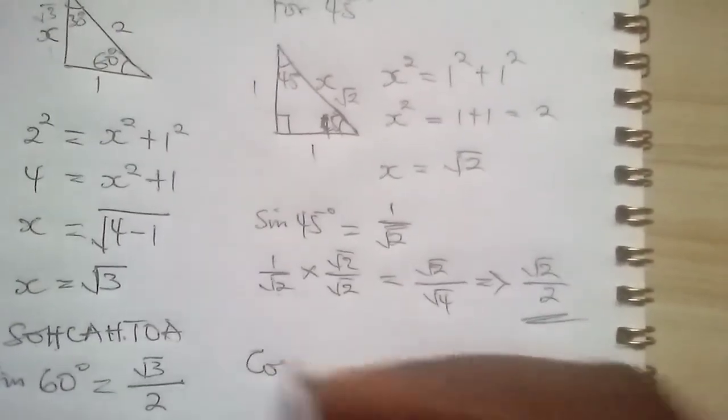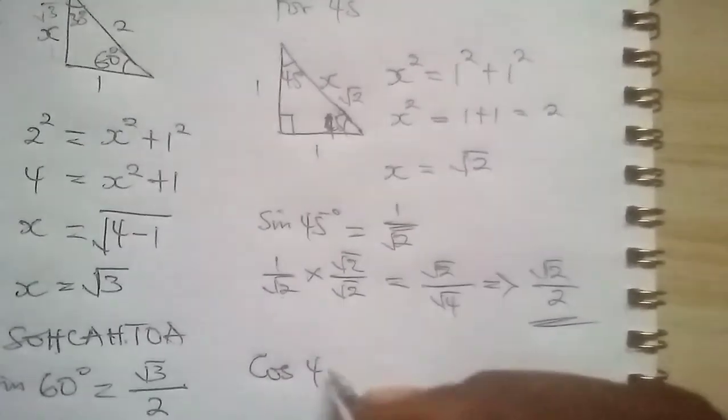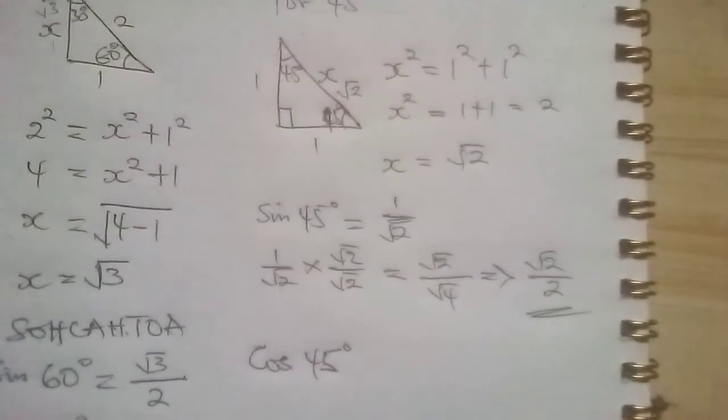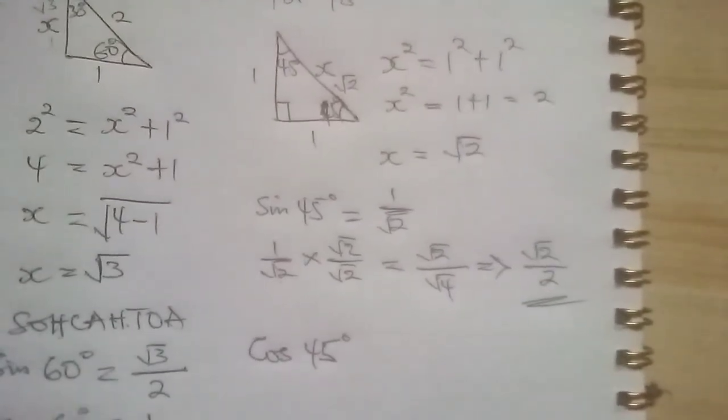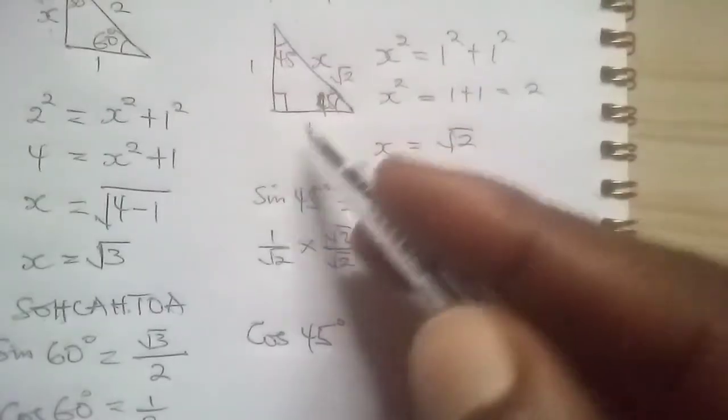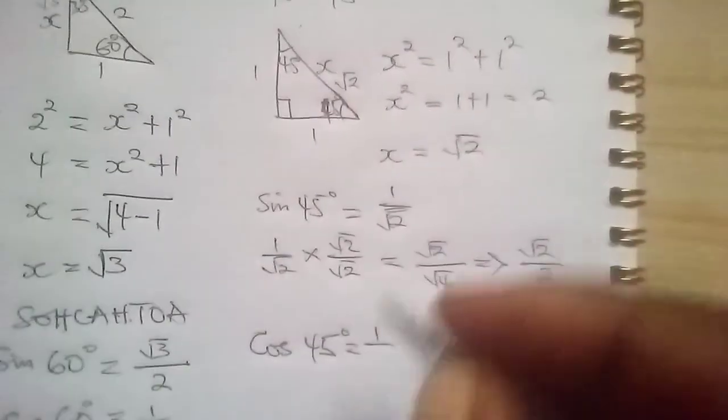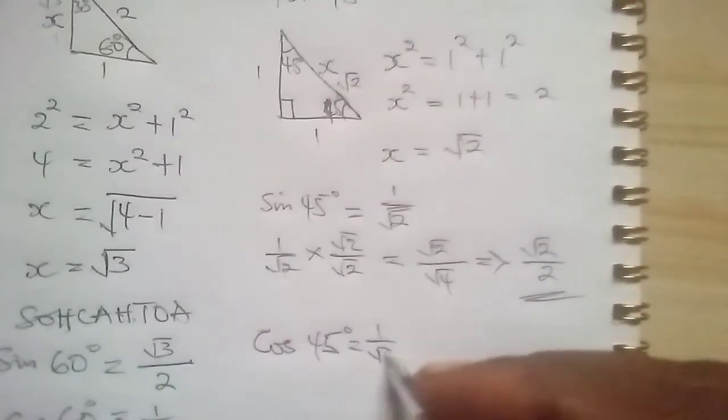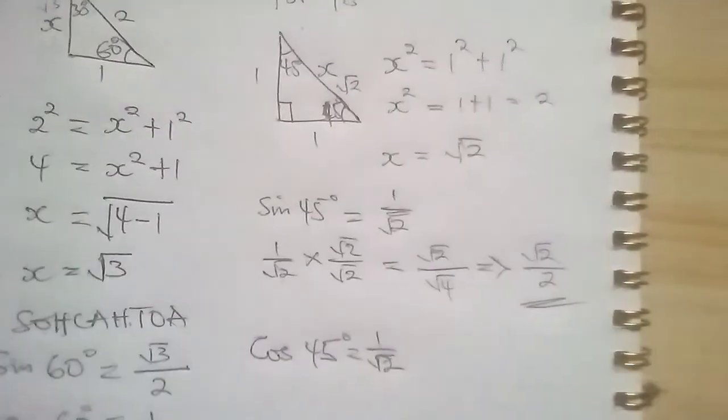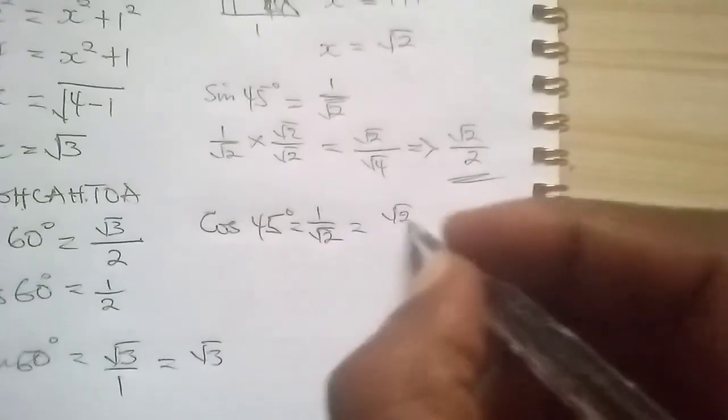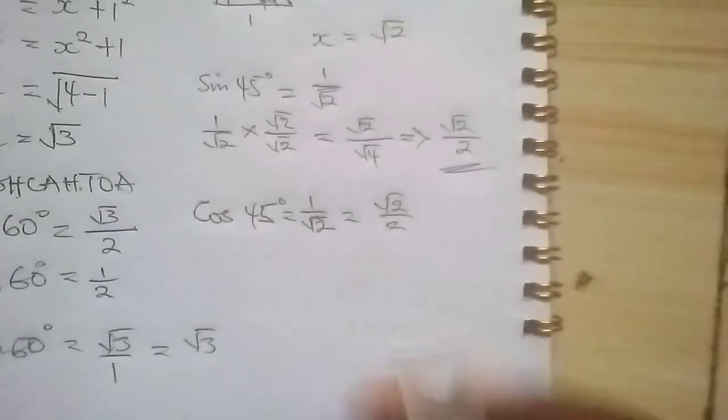So if we go for cos 45, it's still the same. Cos is going to be adjacent over hypotenuse. So if we use this adjacent, which is 1 over root 2, so you still do the same. And then you will get root 2 over 2. So that's it.